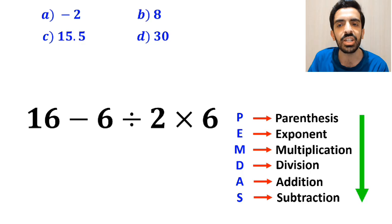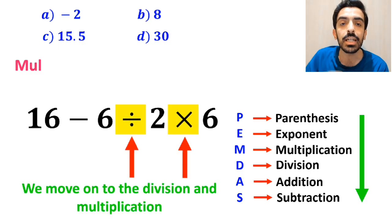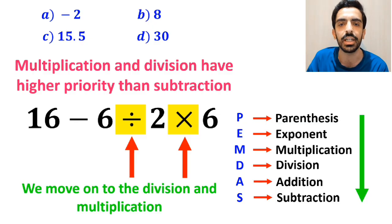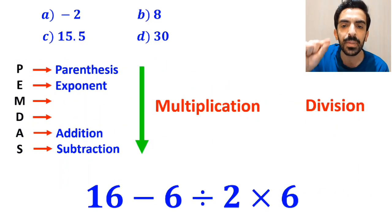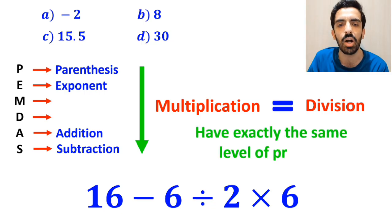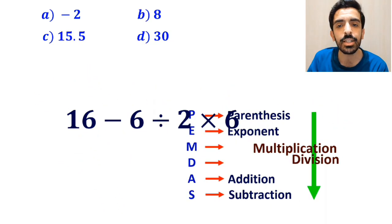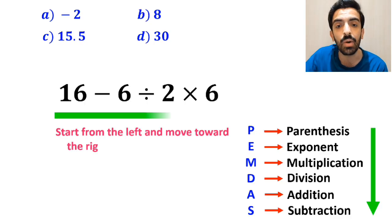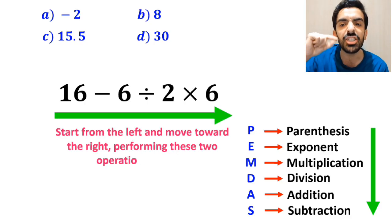In the next step, we move on to the division and multiplication, because multiplication and division have higher priority than subtraction. However, it's very important to note that multiplication and division have exactly the same level of priority. In this situation, the best approach is to start from the left and move toward the right, performing these two operations in order.